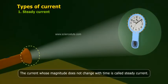The current whose magnitude does not change with time is called steady current.